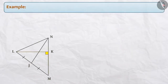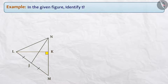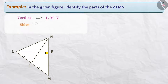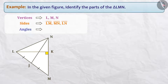Next example: identify the paths indicated in the triangle LMN. Here, we are given triangle LMN. Its vertices are L, M, and N. Sides are LM, MN, and LN. And its angles are angle LMN, angle MNL, and angle NLM.